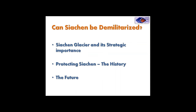The 1949 Karachi Agreement carefully delineated the line of separation only up to a point called NJ 9842, beyond which the region is completely uninhabited. The agreement states the line would continue towards the glaciers, and leaders at the time likely felt it was unnecessary to define beyond this point. India's stance is that the line should continue due global north, placing Siachen within Indian territory, whereas Pakistan's claim differs. Even the 1972 agreement made no changes to the 1949 Line of Control details.